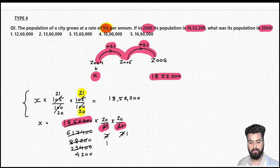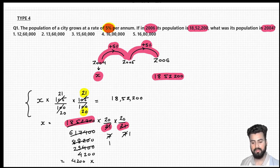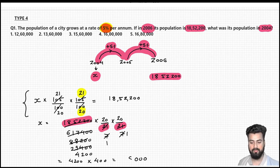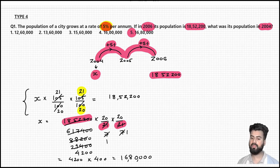After all cancellations we get 4,200. Now multiply 4,200 by 20 twice — that is, by 400 — placing three zeros and multiplying: 4 times 4 is 16, giving 16,80,000. So 16,80,000 is the answer to this question, which is option 5. Option 5 is the correct answer.